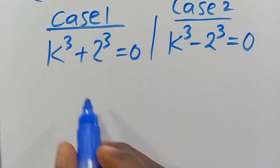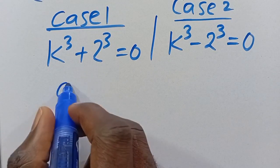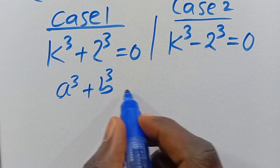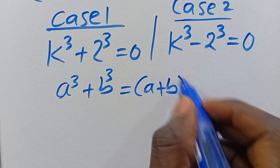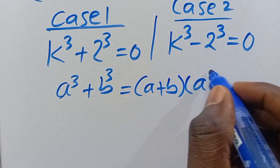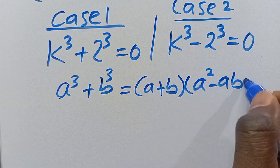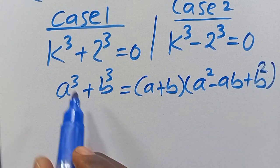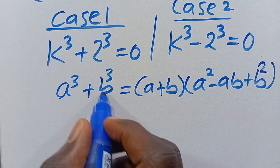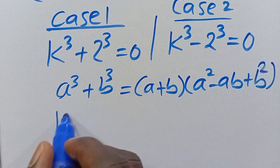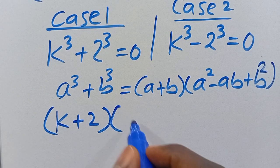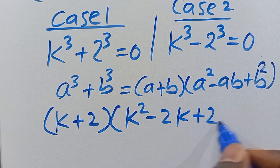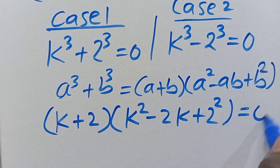So from here, let's go with Case 1. Recall that when we have a to the power of 3 plus b to the power of 3 — the sum of two cubes — it equals a plus b multiplied by a squared minus ab plus b squared. Applying it here, our a is k and our b is 2, so we have k plus 2 multiplied by k squared minus 2k plus 2 squared equals 0.